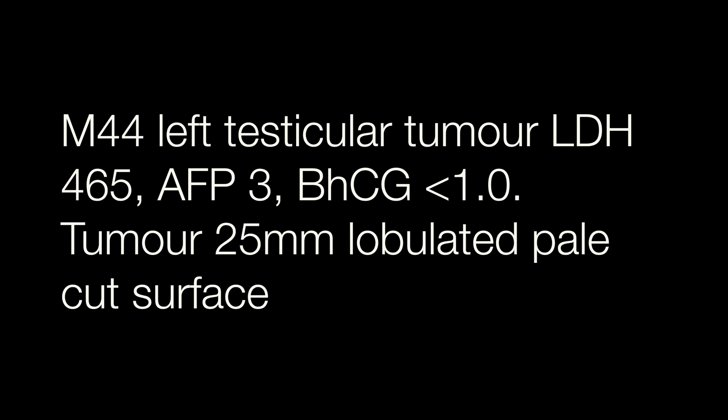Case number 6 is a left testicular tumour from a male of 44. The LDH was 465, but AFP was only 3 and beta-HCG was less than 1. Grossly the tumour was 25mm in diameter with a lobulated pale cut surface.